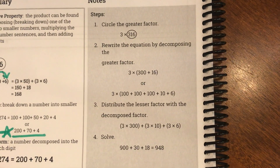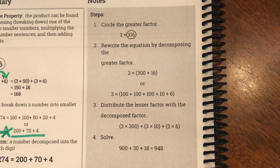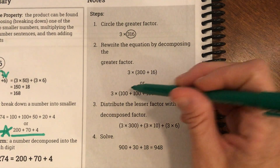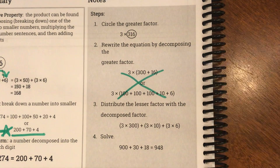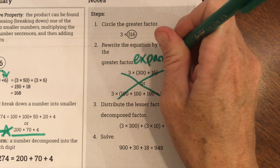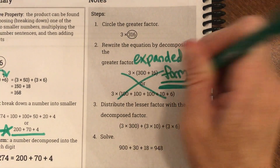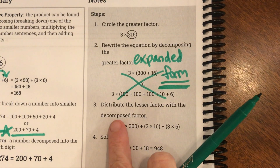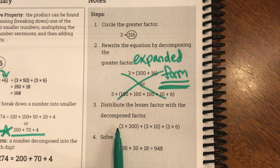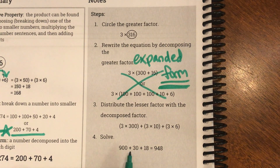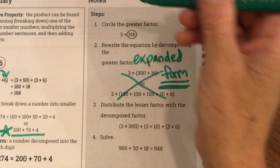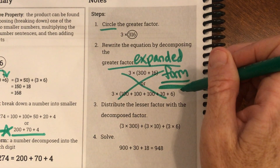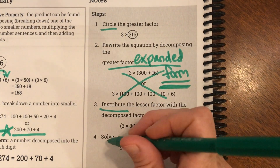Let's look at our steps. Step 1: circle the greatest factor, which we did with the area model. Step 2: rewrite the equation by decomposing the greater factor into expanded form. Step 3: distribute or pass out the lesser factor to the decomposed parts. Step 4: solve each part and then add the products together.